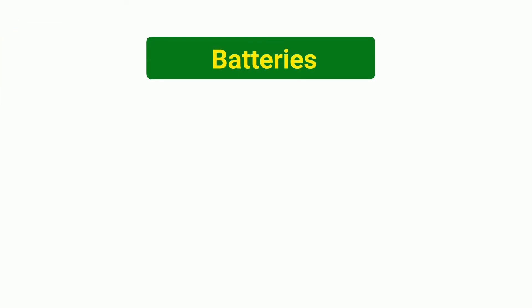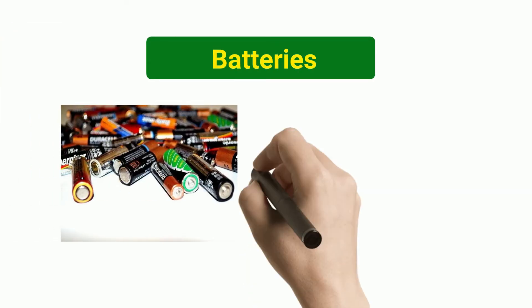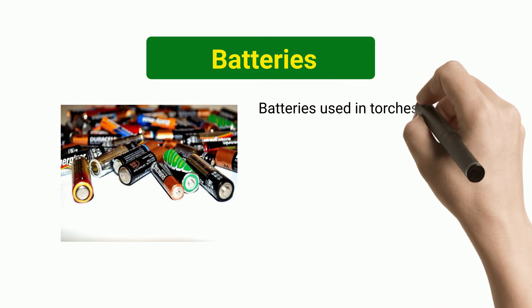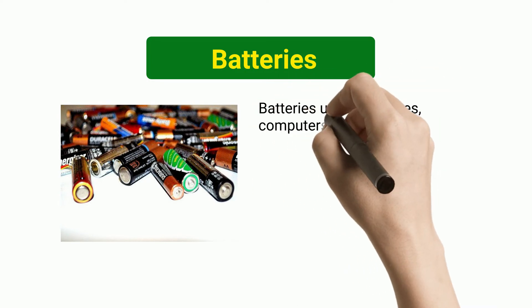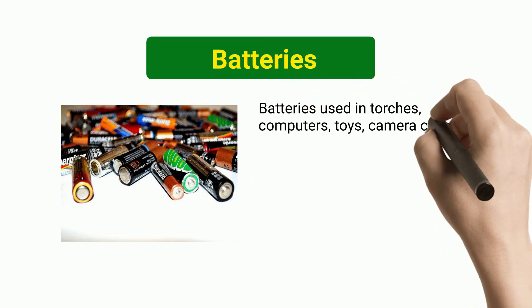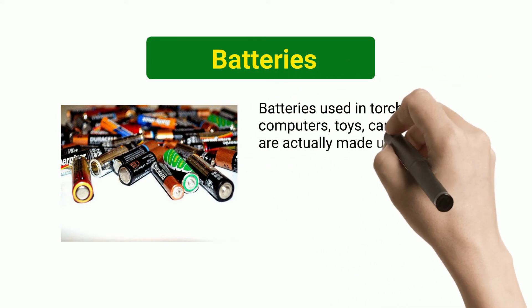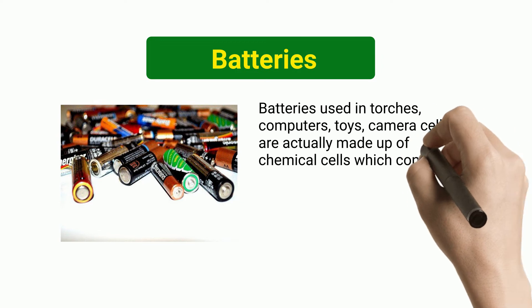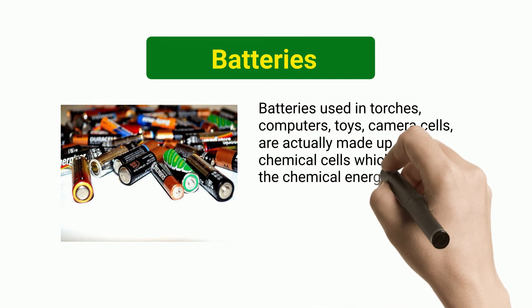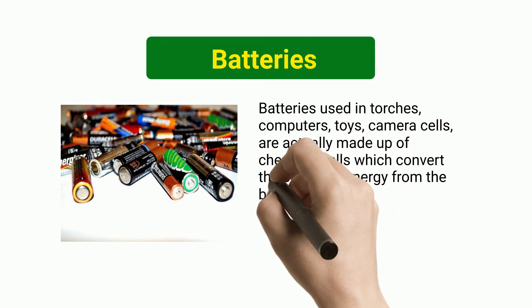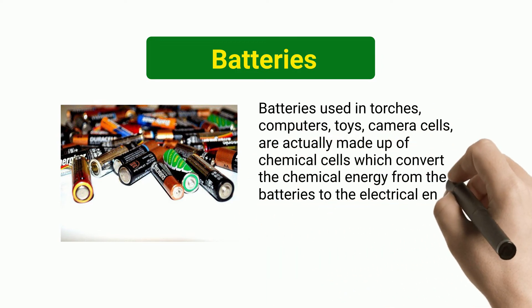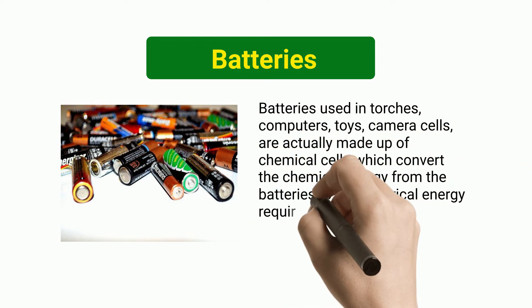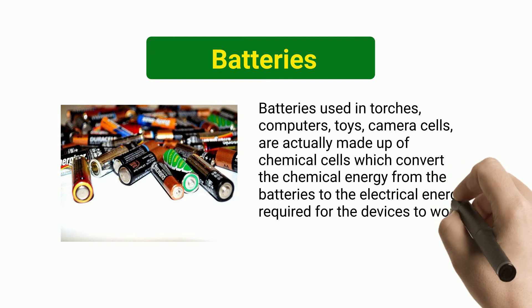Batteries: Batteries used in torches, computers, toys, and camera cells are actually made up of chemical cells, which convert the chemical energy from the batteries to the electrical energy required for the devices to work well.